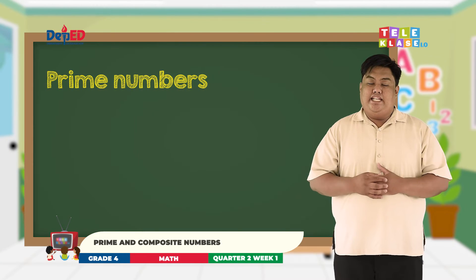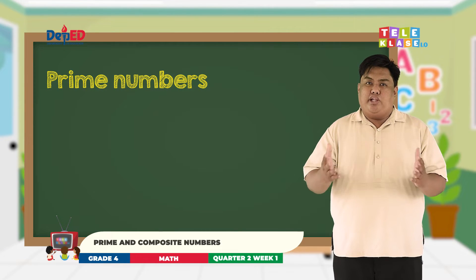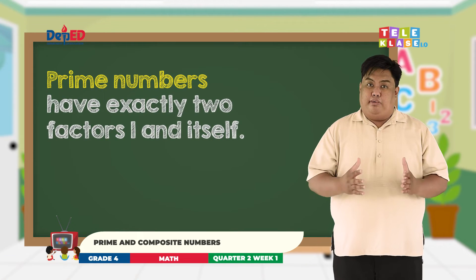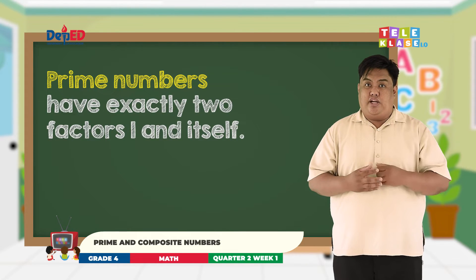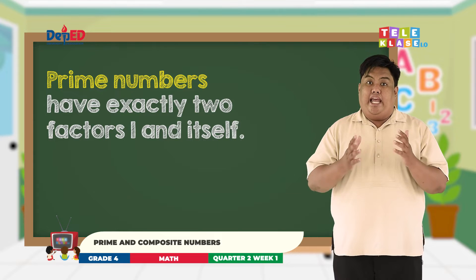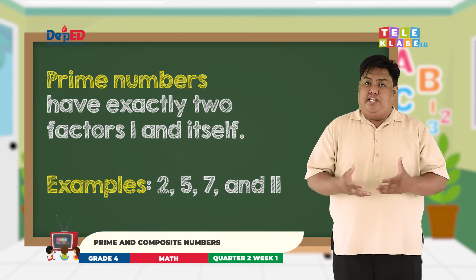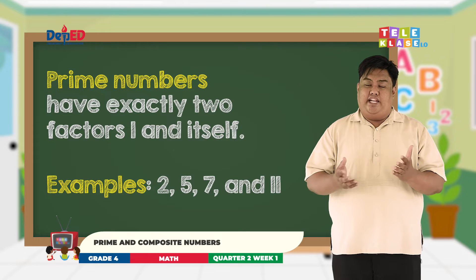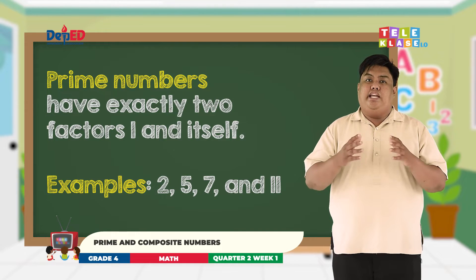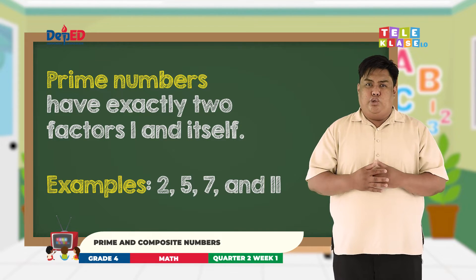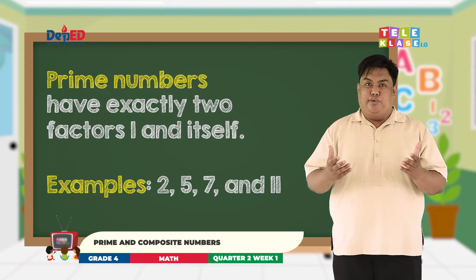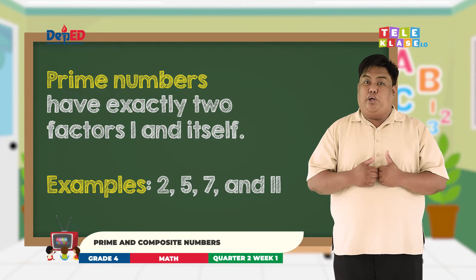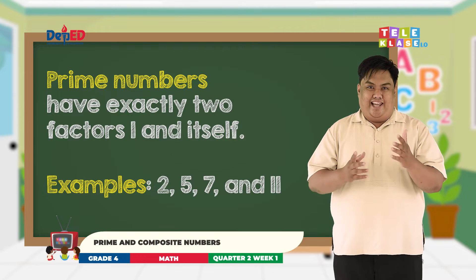First, let us define prime numbers. So what are prime numbers? Prime numbers are numbers that have exactly 2 factors: 1 and itself. Examples of these are 2, 5, 7, and 11. Now let's take 2 as an example. So what are the factors of 2? Correct! The factors of 2 are only 1 and itself.